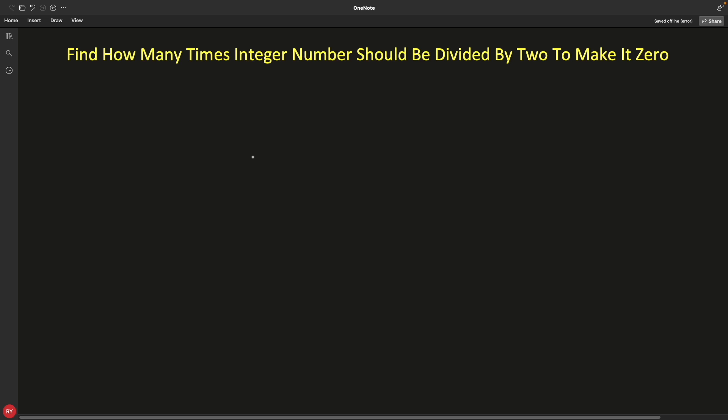Hello friend, this is Rupesh and you are watching cppnets video series on bit manipulation interview question series. This is question number third in this video series and this is about finding how many times an integer number should be divided by two to make it zero.